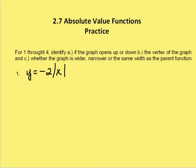Let's take problem number one. We have four questions, four different absolute value functions, and we're going to figure out a couple things: one, we're going to identify if the graph opens up or down; two, we're going to identify the vertex of the graph; and three, we're going to decide whether the graph is wider, narrower, or the same width as the parent function. We have the form Y is equal to A times the absolute value of X minus H, plus K, where H and K are our vertex, A describes the orientation of the graph, and H and K are the shift of the graph itself.